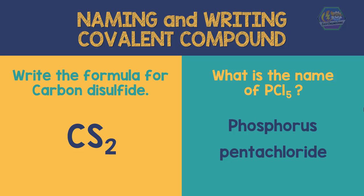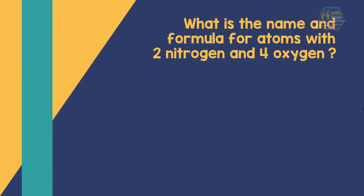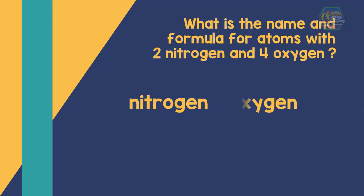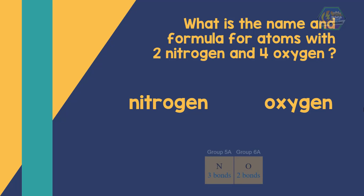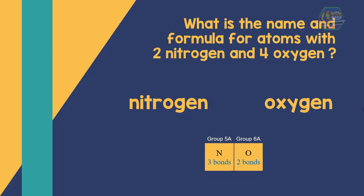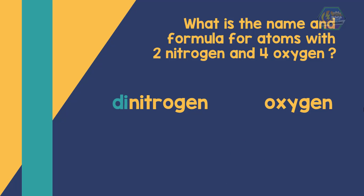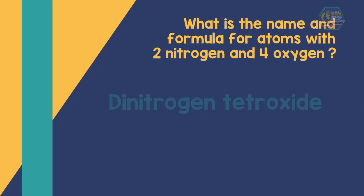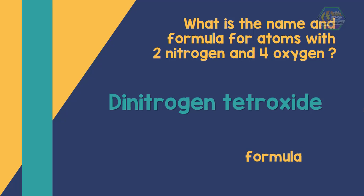Next, what is the name and formula for a compound with two nitrogen and four oxygen? Nitrogen comes first before oxygen because it is under the lower group number. There are two nitrogen atoms so we use the prefix 'di,' and for oxygen we use the prefix 'tetra.' Hence the name is dinitrogen tetroxide, and the formula is N2O4.